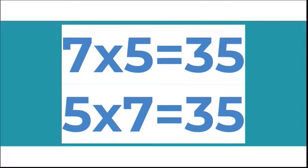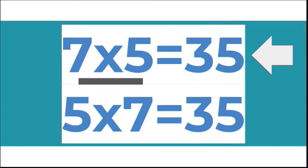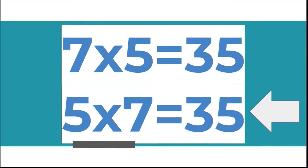The commutative property of multiplication says that it doesn't matter which way you multiply two factors, you'll still get the same product. So for example, 7 times 5 would give you 35. And it doesn't matter if you do 5 times 7, you would still get 35, because you have either 7 groups of 5 or 5 groups of 7, which in total give you 35 as your product.